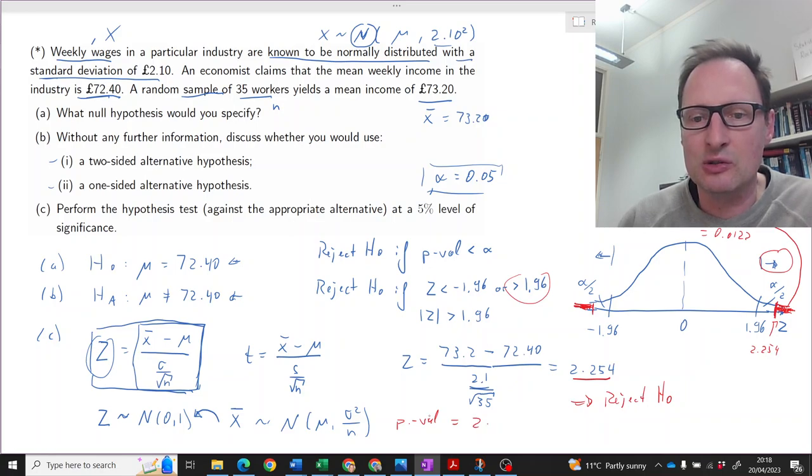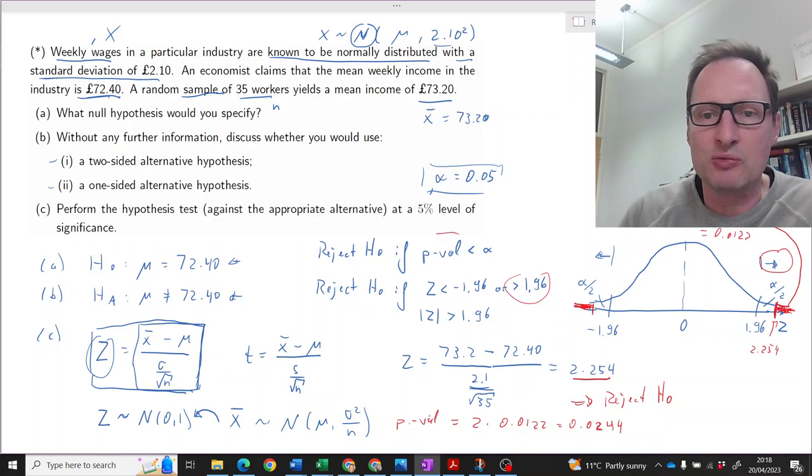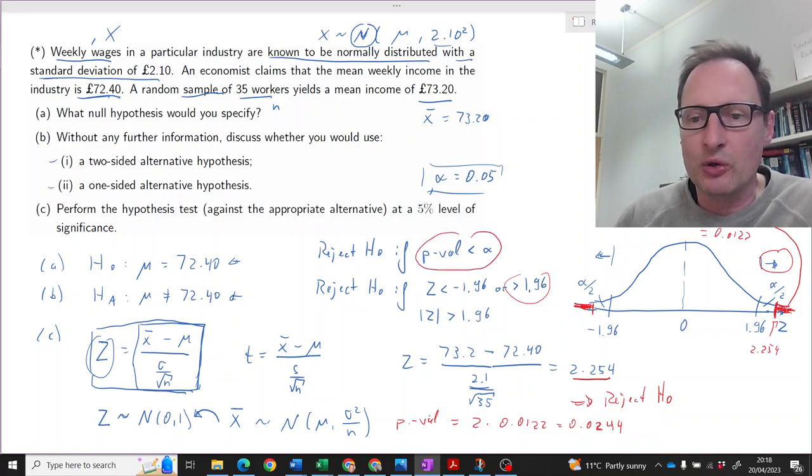That means that the p-value is double that size because we are adding that size on the left. So it's two times 0.0122, so that is 0.0244. And of course, we get the same decision because that p-value is smaller than alpha, which is 5%. We will of course also come to the same decision: we should reject H-naught.